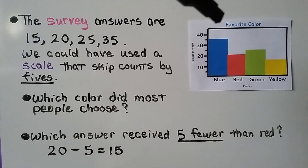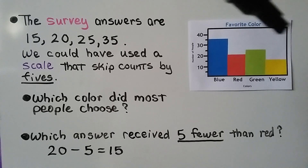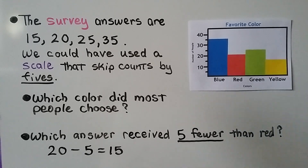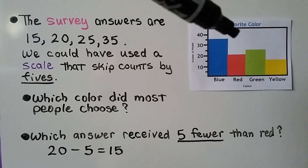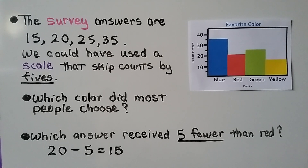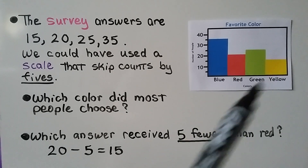Bar graphs make it easy to see data. Just by looking at this bar graph, can you tell which was the most favorite color? We can see that the blue bar is the tallest, so blue has the most answers. Can you see which one is least? We look for the shortest bar — it would be yellow.